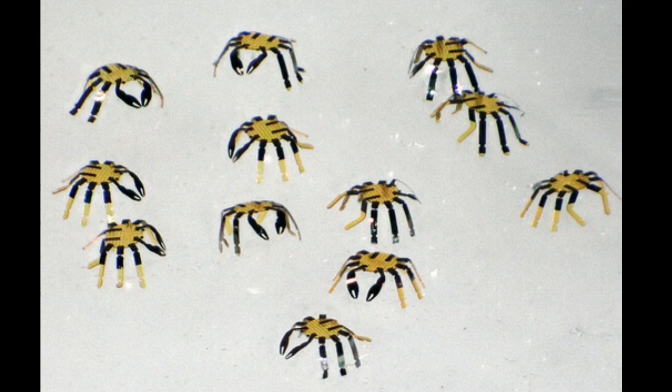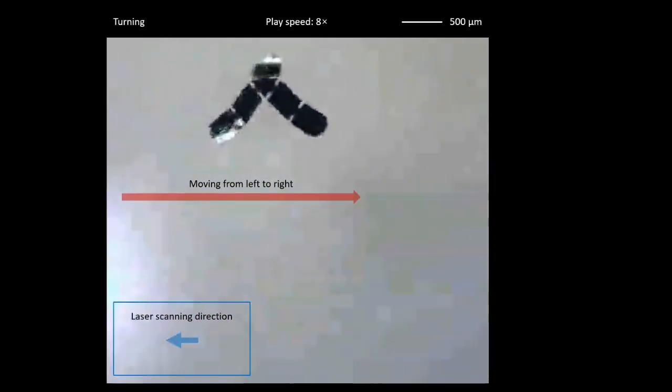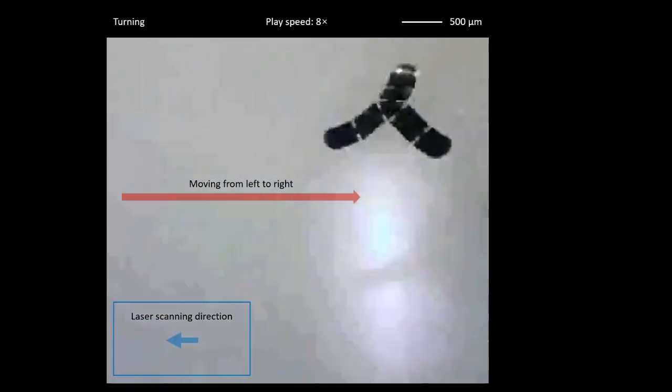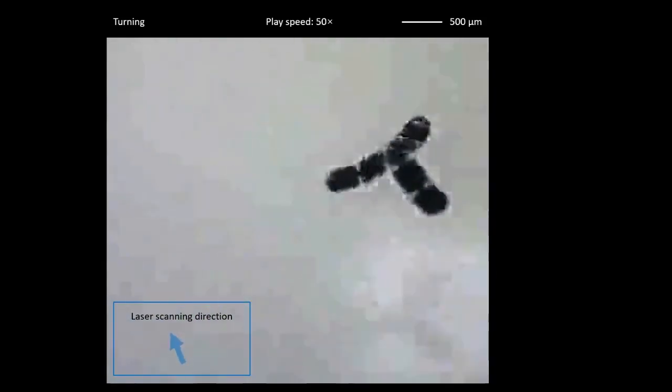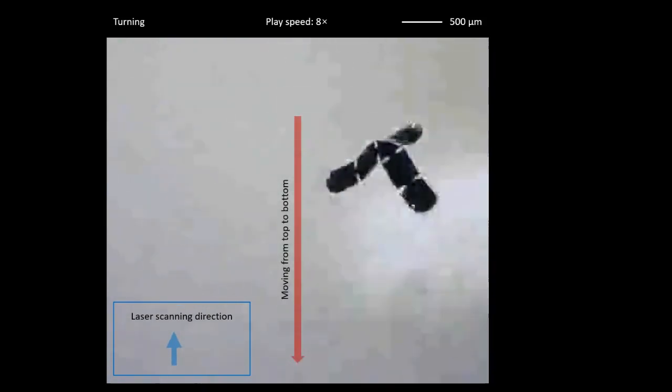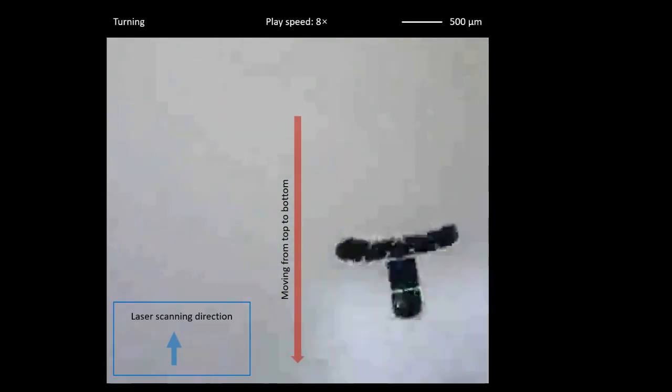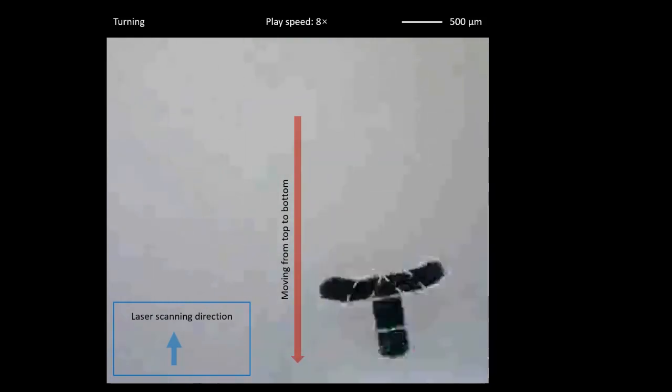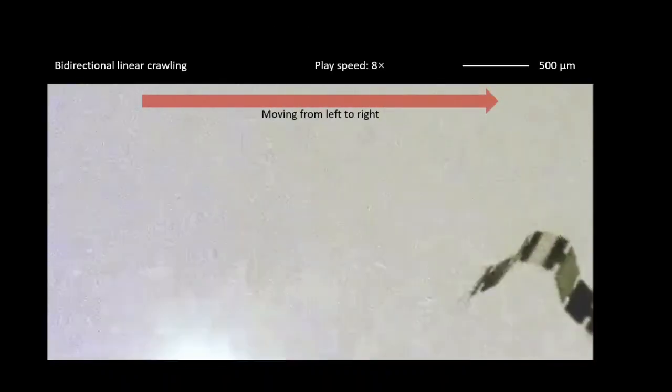To construct the robot, the researchers used a shape-memory alloy material that transforms to its remembered shape when heated. The researchers used a scanned laser beam to rapidly heat the robot at different targeted locations across its body. A thin coating of glass elastically returns that corresponding part of structure to its deformed shape upon cooling. As the robot changes from one phase to another, deformed to remembered shape and back again, it creates locomotion.